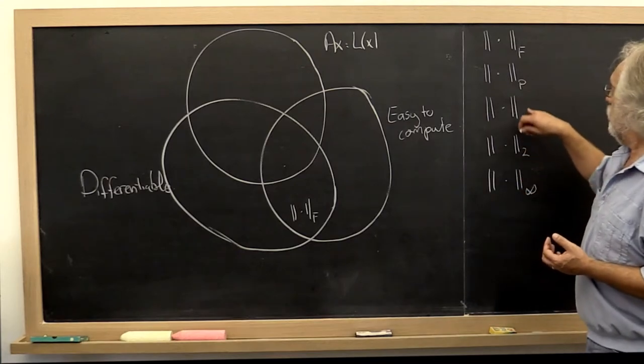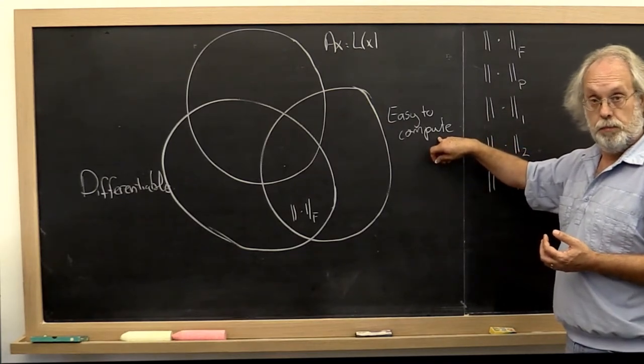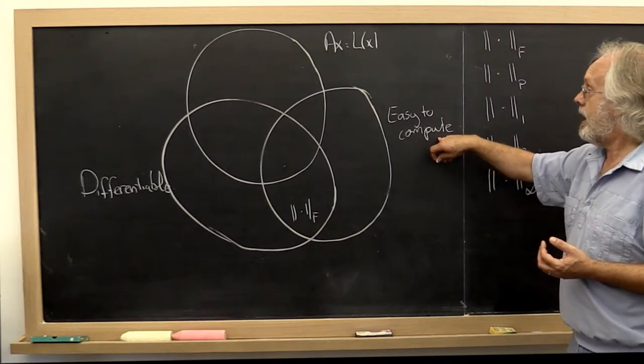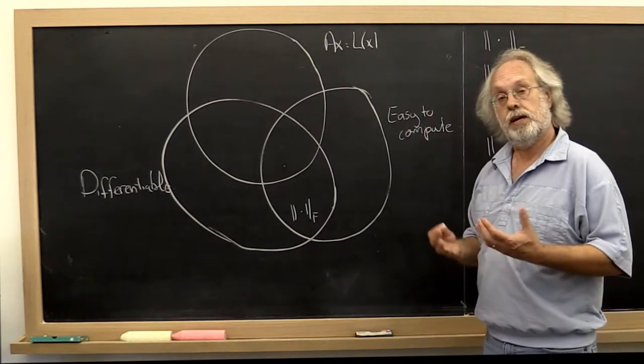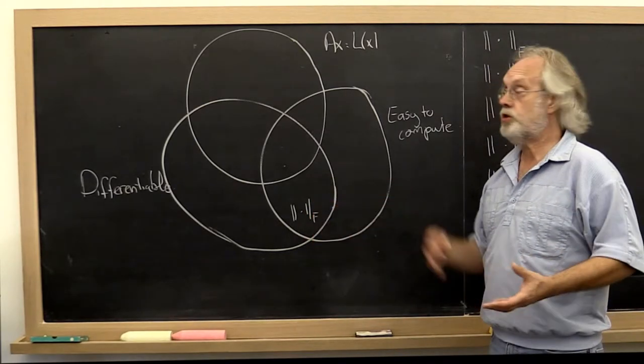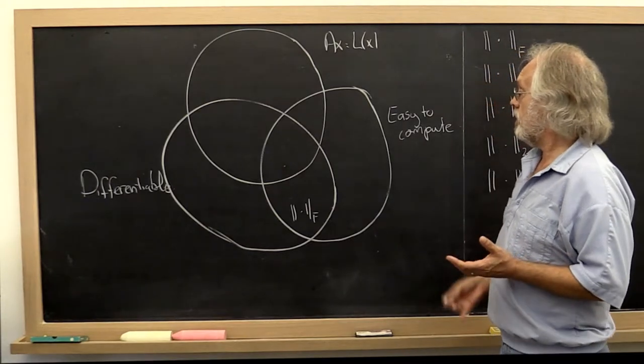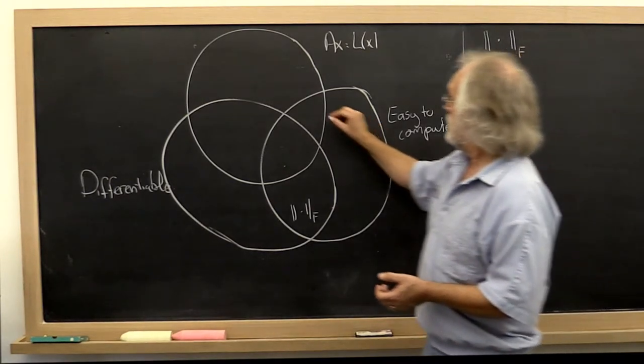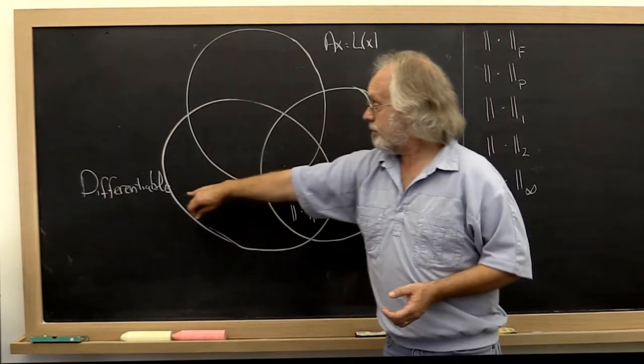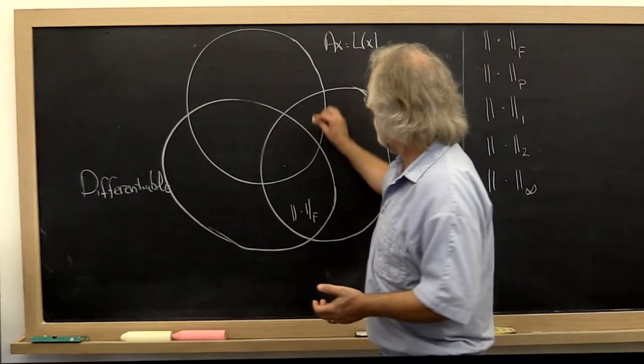Now what about the 1-norm? Well, the 1-norm we saw is easy to compute and it measures by how much A stretches a matrix, which is a notion that you can also link to a linear transformation. So therefore, the 1-norm belongs right here. It's not differentiable because the sum of absolute values is not differentiable.